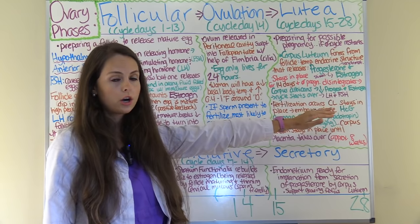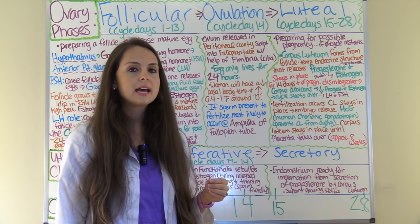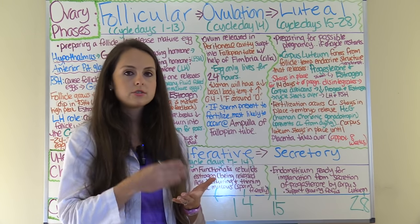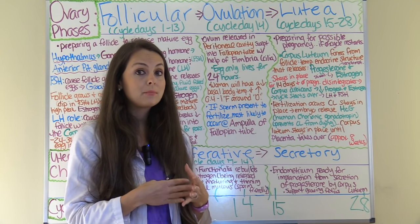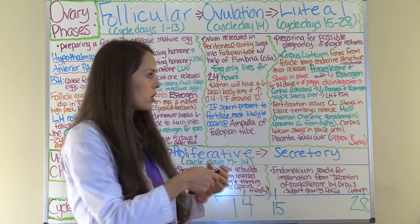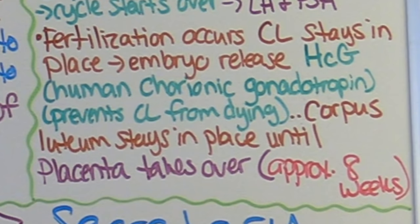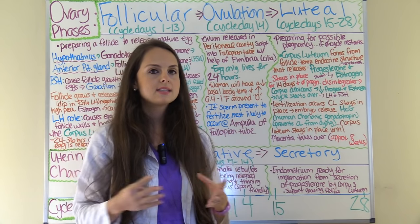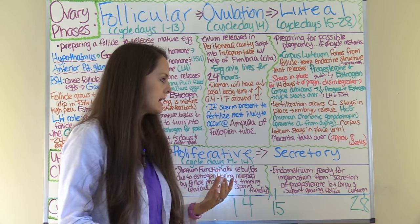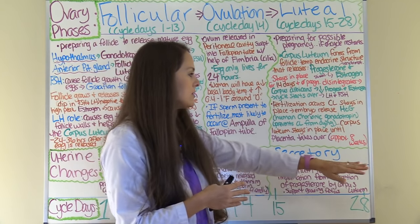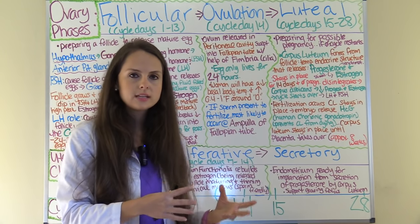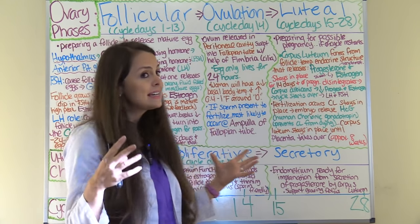If fertilization did occur, the corpus luteum will stay in place, continuing to secrete progesterone and estrogen so the fertilized egg can implant into the endometrium. The embryo will start to release HCG — human chorionic gonadotropin — which is what pregnancy tests pick up, and this prevents the corpus luteum from dying. The corpus luteum stays in place until the placenta takes over at about 8 weeks, at which point it produces massive amounts of progesterone and estrogen to maintain the pregnancy, and the corpus luteum has done its job and dies.